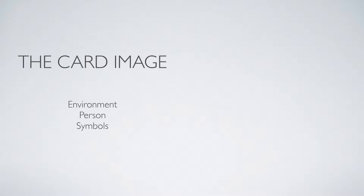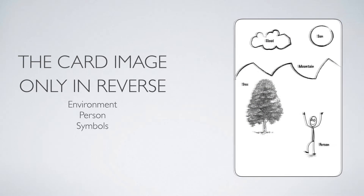The logic is pretty much the same — we're not going to learn something entirely new, just a perspective we need to adopt while looking at reverse cards. We're still going to interpret the card image by looking at the environment, the person, and the symbols, but only in reverse. Here we have the familiar example image with the sun, cloud, mountain, tree, and person. We interpreted this upright card as a clear sunny day where the person has found rest and is happy.